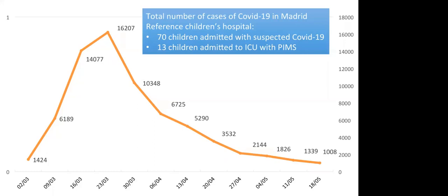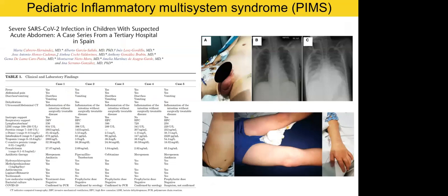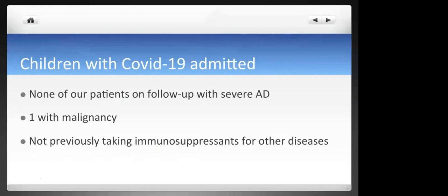During the main outbreak in Madrid, even though there were many thousands of adult patients, very few children were admitted to hospital with COVID-19 — only 17 children were admitted, and of these, only 13 were admitted to intensive care units with severe manifestations. The most severe manifestation in children is called pediatric inflammatory multisystem syndrome, which is close to Kawasaki disease, and causes shock and severe gastrointestinal manifestations. Fortunately, none of our patients had a bad outcome — all 13 survived.